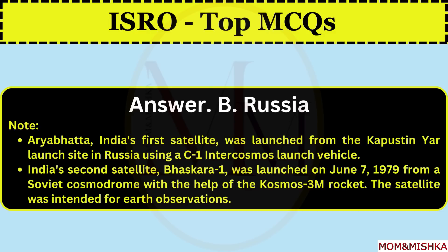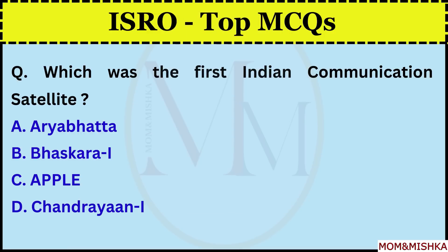Aryabhatta, India's first satellite, was launched from the Kapustin Yar launch site in Russia using a C1 Intracosmos launch vehicle. India's second satellite, Bhaskar 1, was launched on 7 June 1979 from a Soviet Cosmos drone with the help of the Cosmos 3M rocket. The satellite was intended for Earth observations. Which was the first Indian communication satellite?